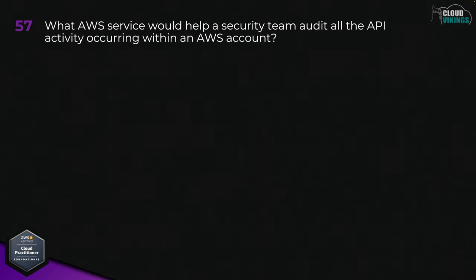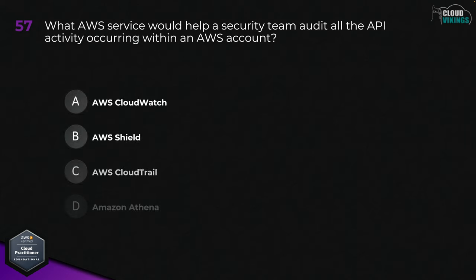Question fifty-seven: what AWS service would help a security team audit all the API activity occurring within an AWS account? Options are: A, AWS CloudWatch; B, AWS Shield; C, AWS CloudTrail; D, Amazon Athena; or E, Amazon TrailWatch. The answer here would be C, AWS CloudTrail.